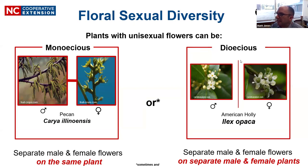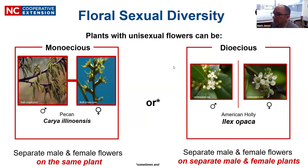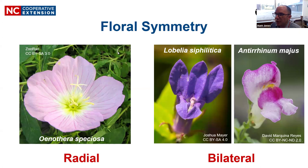This monoecious-dioecious dichotomy is not really a strict dichotomy — there can be lots of variation between, including plants that have individuals mostly male flowers with a few female flowers or vice versa. Generally though, if they do have unisexual flowers, it's either monoecious or dioecious. Another thing to look at is the symmetry of a flower. Typically they can be classified into two groups: radially symmetrical or bilaterally symmetrical.